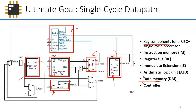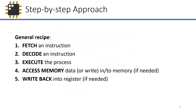Now, how do we mix the ingredients together? We'll add things like multiplexers, other adders, and more multiplexers to control how the data path flows. Here's the general recipe — and the nice thing is you'll see it even in multicycle or pipeline stages: fetch, decode, execute, access memory, and write back.